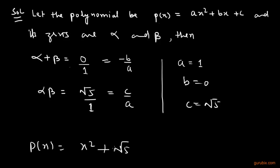So p(x) is equals to x square plus root 5. This is our solution, thank you.